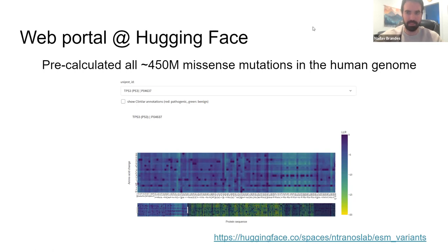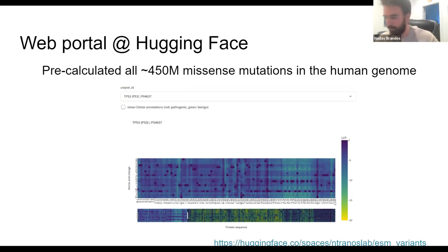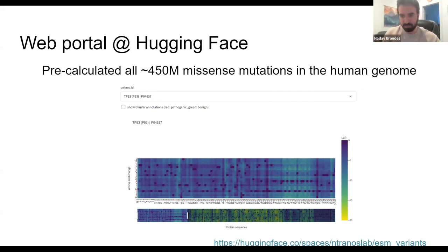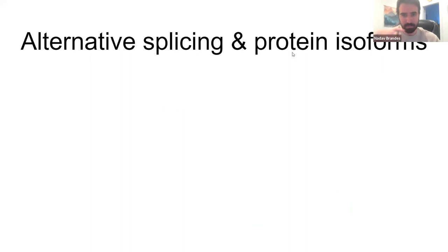The portal allows you to query a gene and get hit maps with scores for every mutation you care about, and you can also download the entire dataset. Now let's speak about how we could use protein language models as a variant effect predictor to study the phenomenon of alternative splicing and protein isoforms.